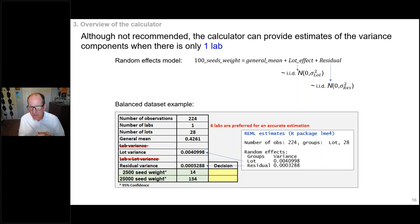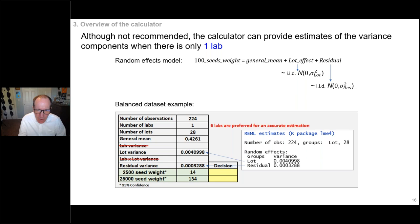We did some validation to show that Henderson's method gives good variance component estimates, comparing with REML estimates. Where we have balanced data, the Henderson and REML estimates are equal. With some imbalance, they won't be exactly equal but are very comparable. The general mean M gives us the KM — the 2,500 seed weight or the 25,000 seed weight — depending on whether K equals 25 or 250.